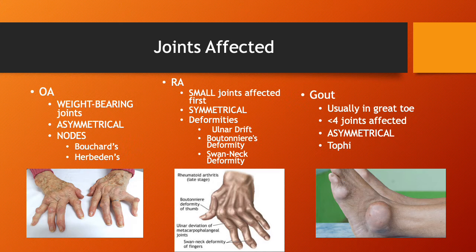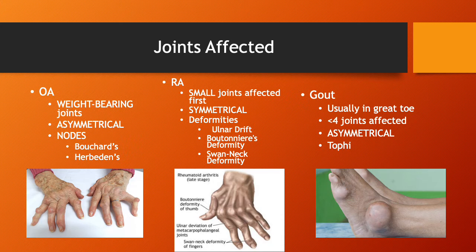Gout can be found in the hands, toes, ears — pretty much any joint — but most commonly it appears in the great toe (the big toe). Unlike OA and RA where many joints can be affected, gout typically involves fewer than four joints and is asymmetrical. People with gout have what are called tophi, which are deposits of uric acid crystals. Through the skin these can appear whitish in color, compared to the redness seen in OA and RA.